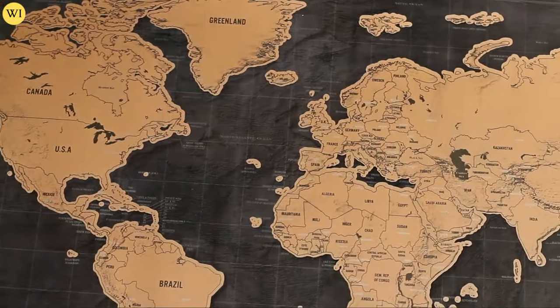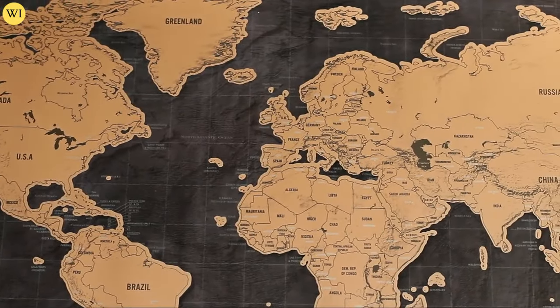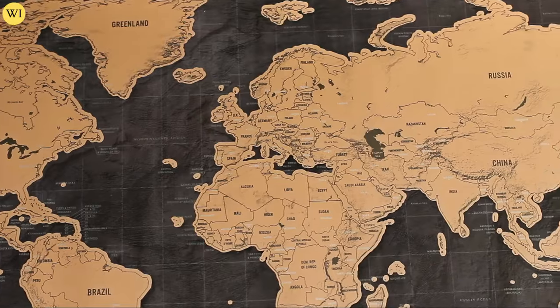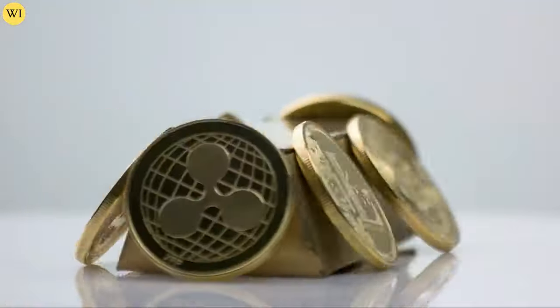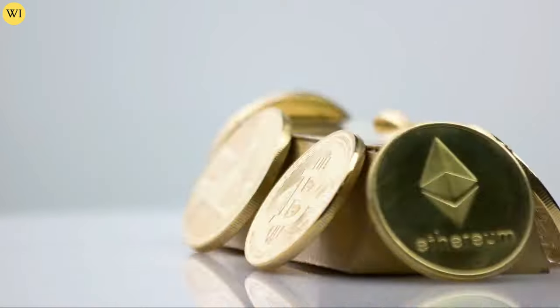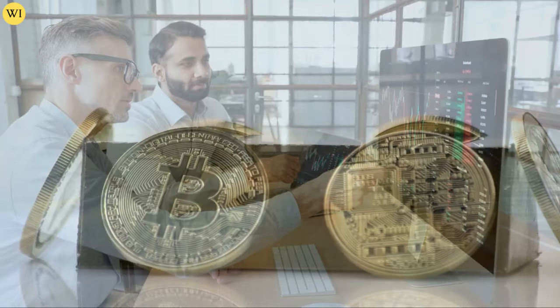And look, you have five major mints or six major mints around the world, US, Canada, Austria, Australia, South Africa, UK. You take one or two out of commission, let alone all of them, and like that, it grinds to a halt.